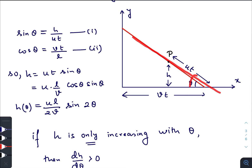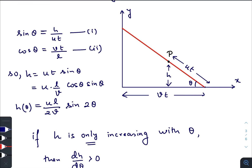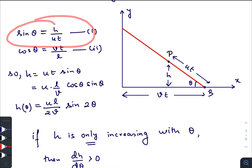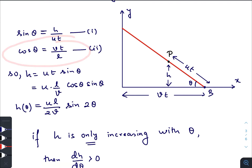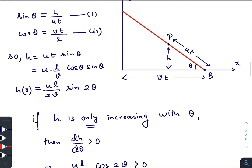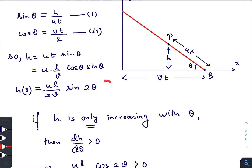Let us check: suppose at any time t, the rod is inclined at angle theta. The beetle has traveled a distance ut along the rod upward, and point B has traveled a distance vt. So sin(theta) = h / (ut) and cos(theta) = vt / L from the diagram. Therefore h = ut·sin(theta). Replacing t from the second equation gives h as a function of theta.